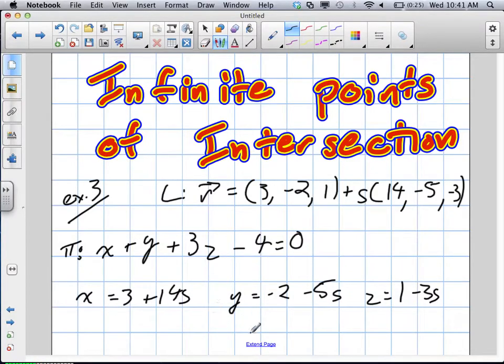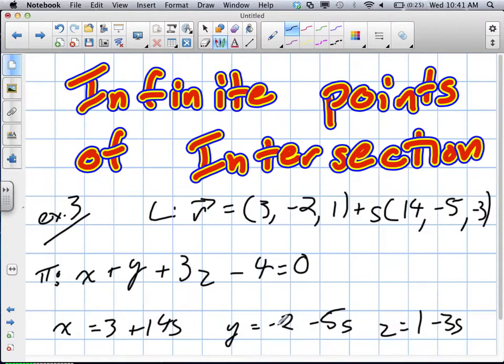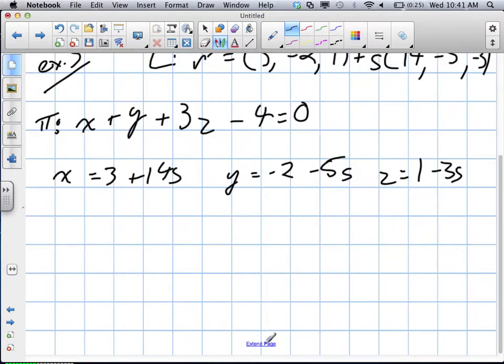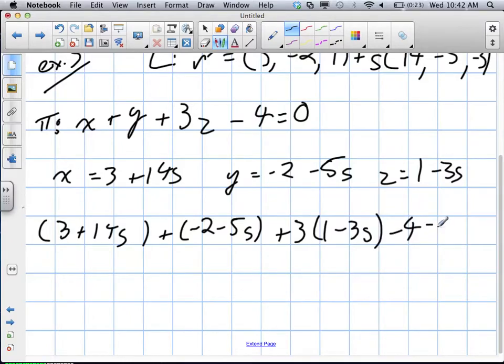Once we've done that, we're going to plug them into the Cartesian form of the plane. That's going to give us 3 plus 14s, plus negative 2 minus 5s, plus 3 times 1 minus 3s, minus 4 equals 0.